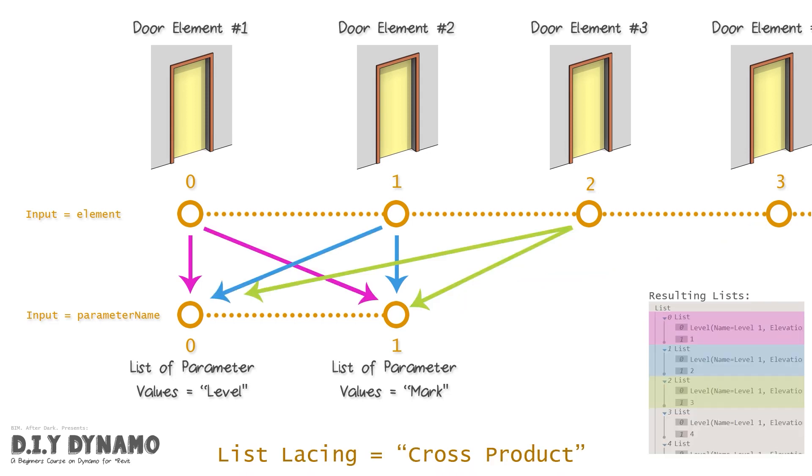Finally, the cross product is going to give us the most possible combination of data using what we've input. And so this is the one that we're actually going to use.